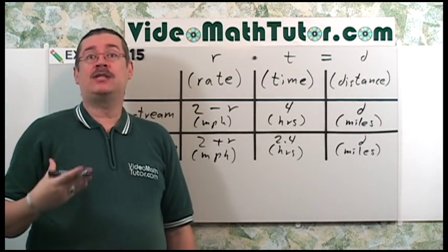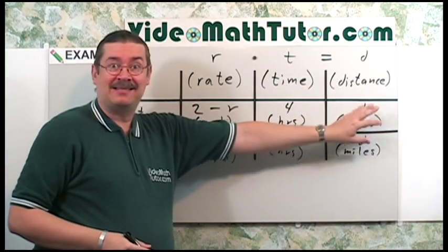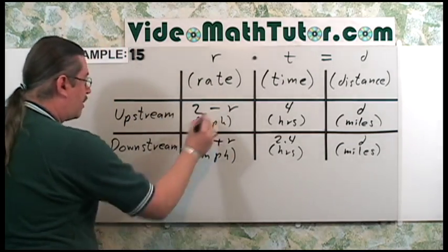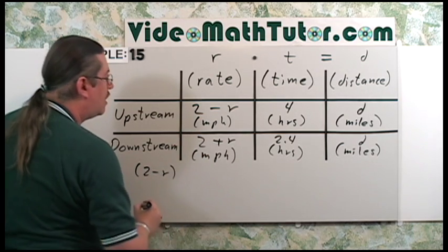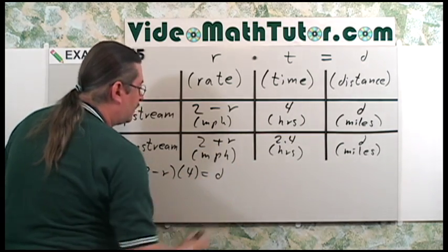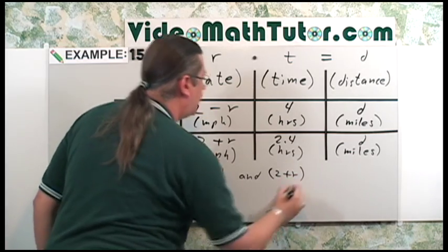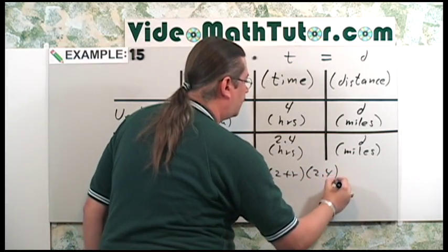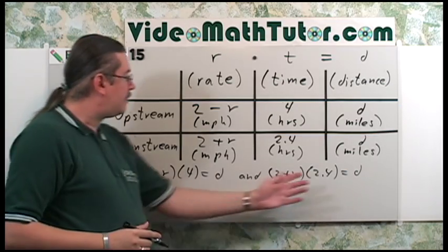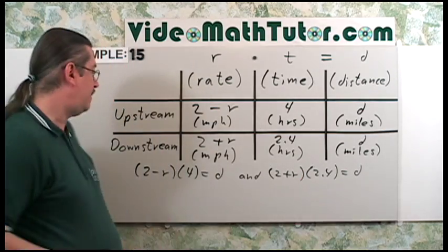Now we want to try to create at least one equation. In this case, rate times time equals distance. Twice. Let's write those down. Rate 2 minus r times the time 4 equals the distance D. And over here, let's write down the quantity 2 plus r times the time 2.4 equals D. Now, notice both of these are equal to D. So they're really the same values. So I can set them equal to each other. So let's do that next.